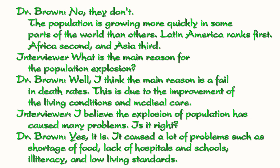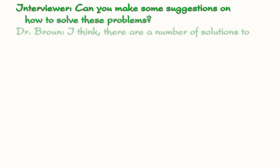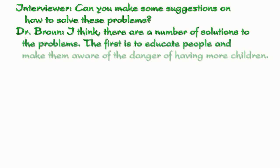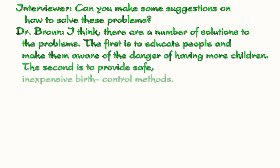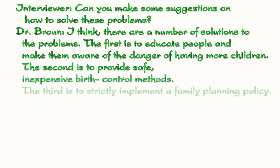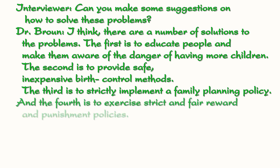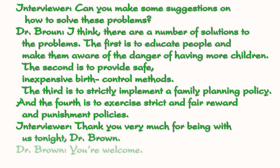Illiteracy and low living standards. Can you make some suggestions on how to solve these problems? I think there are a number of solutions. The first is to educate people and make them aware of the danger of having more children. The second is to provide safe, inexpensive birth control methods. The third is to strictly implement a family planning policy. The fourth is to exercise strict and fair reward and punishment policies. Thank you very much, Dr. Brown. You're welcome.